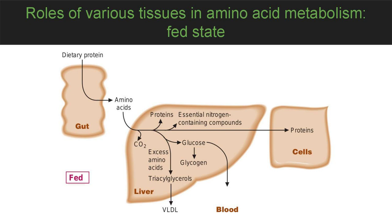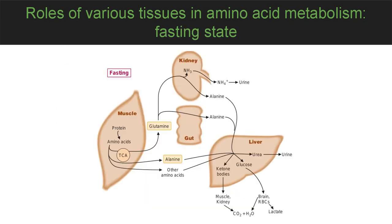Amino acids that pass through the liver are converted to proteins in the cells of other tissues. During fasting, amino acids are released from muscle protein; some enter the blood directly, others are partially oxidized and the nitrogen is stored in the form of alanine and glutamine, which enter the blood.